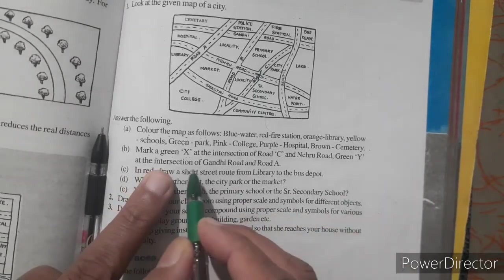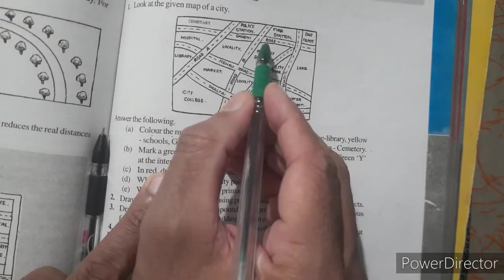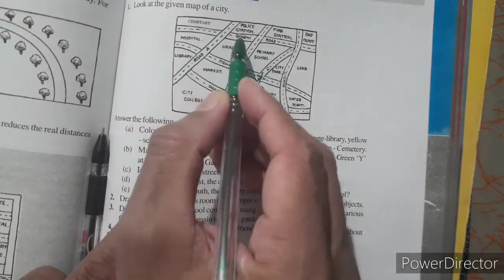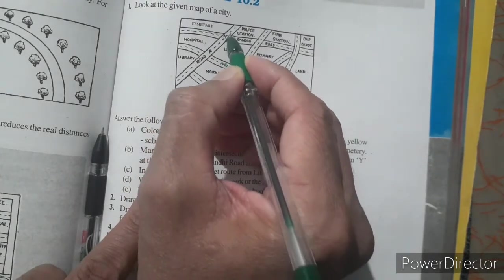Same for green at intersecting of Gandhi road and road A. Where is Gandhi road? It's here. This one is Gandhi road and this one is A. So mark here Y.